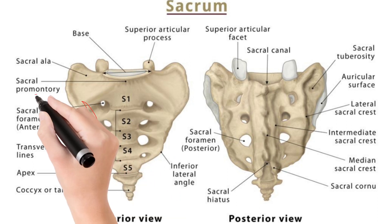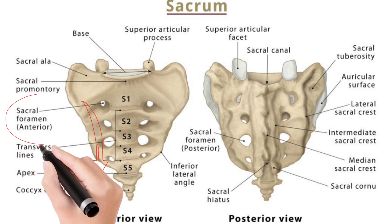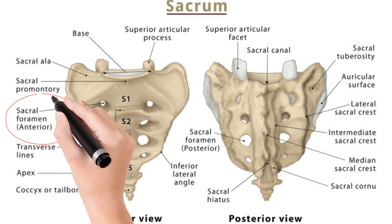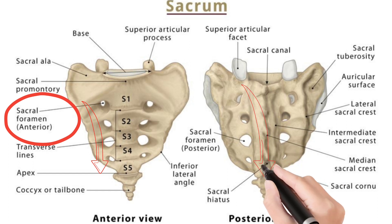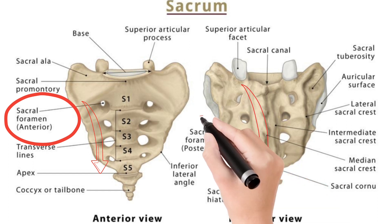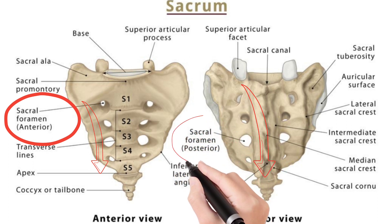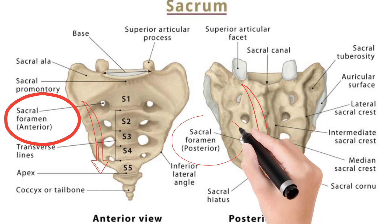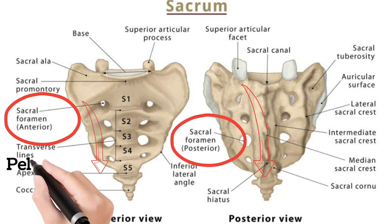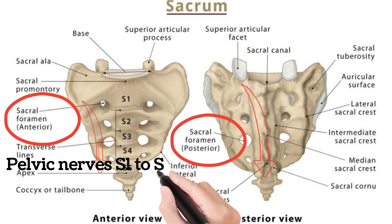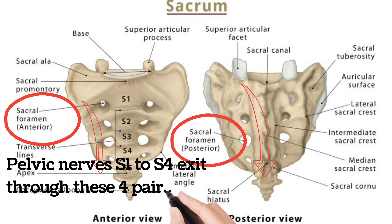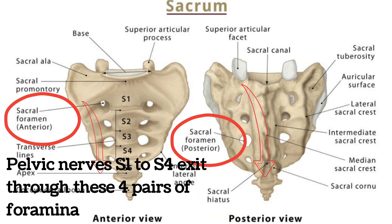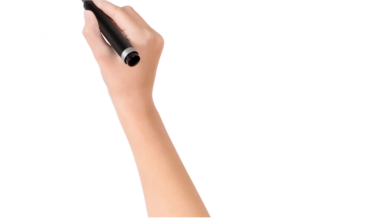You can see four foramina anteriorly and posteriorly. On the anterior aspect, these are the sacral foramina, and on the posterior aspect as well. There are four pairs of sacral foramina, and the pelvic nerves S1 to S4 exit through these four pairs of foramina. This is an important point to note.